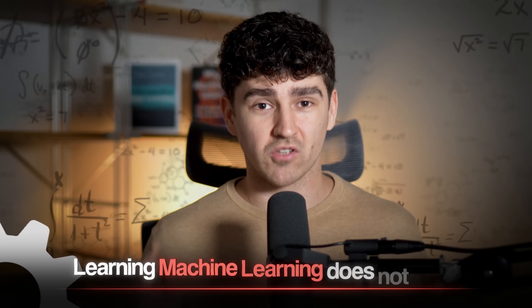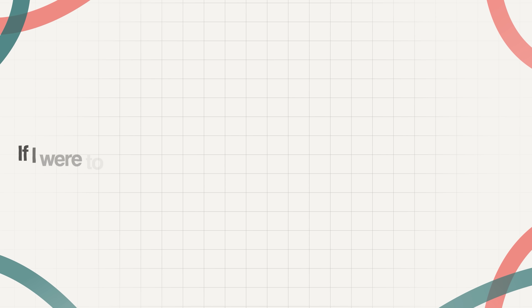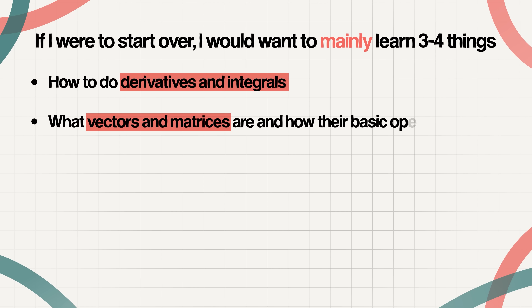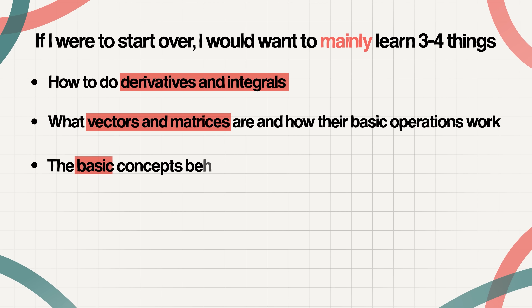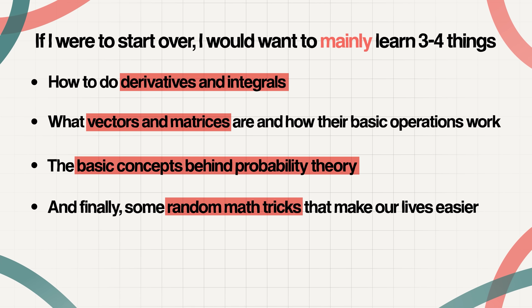Learning machine learning does not require complex math. After studying it for multiple years, I really stand by that statement. So much of machine learning can be understood with fundamental concepts that are mostly undergraduate level. Even professional ML engineers, a large part of them, don't require complex math in their day-to-day life or even in interviews. If I were to start over, I would want to learn mainly three to four things: how to do derivatives and integrals, what vectors and matrices are and how their basic operations work, the basic concepts behind probability theory — which boil down to a fairly small set of concepts and mainly Bayes' rule — and finally some random math tricks like log rules and summation rules.